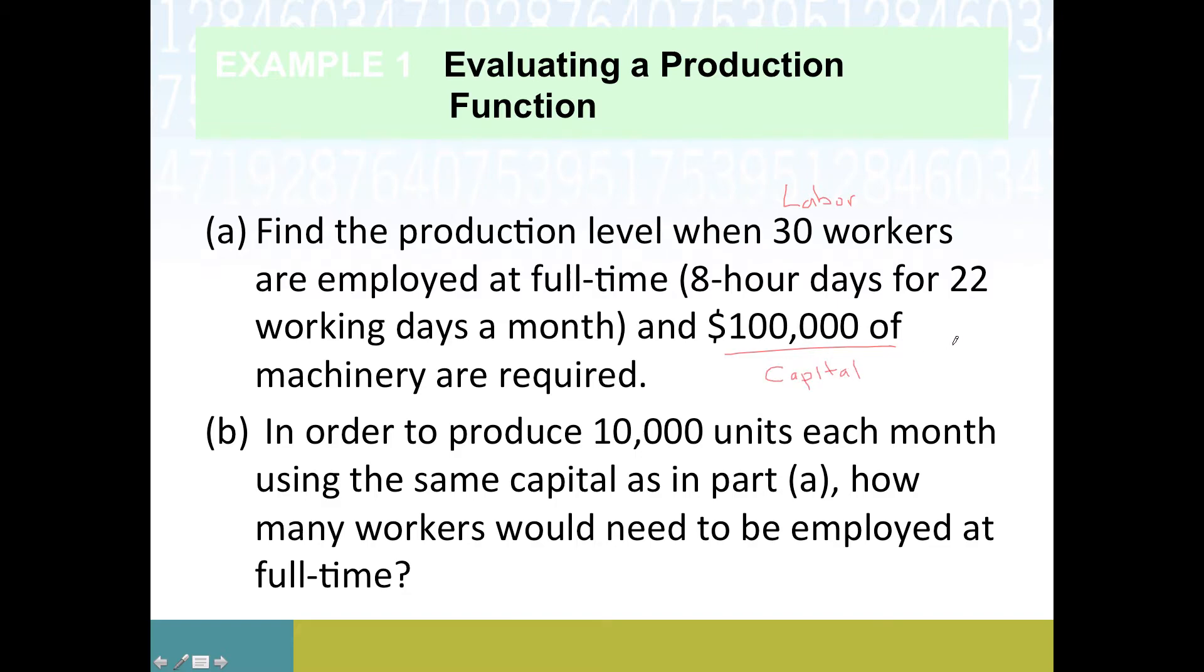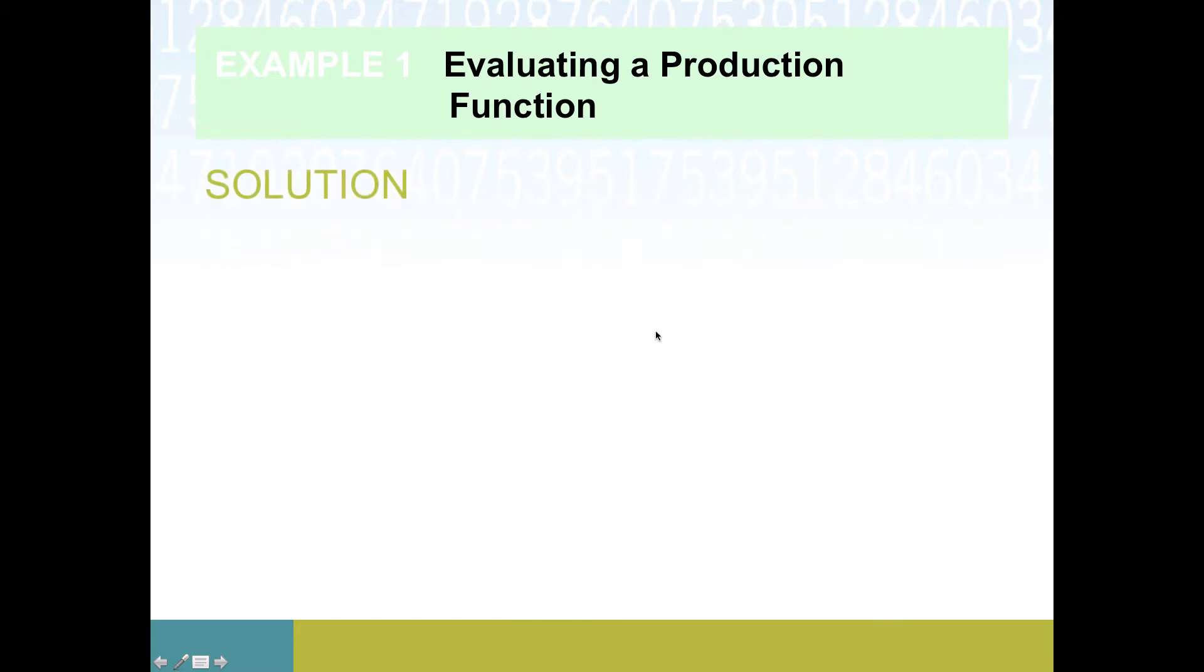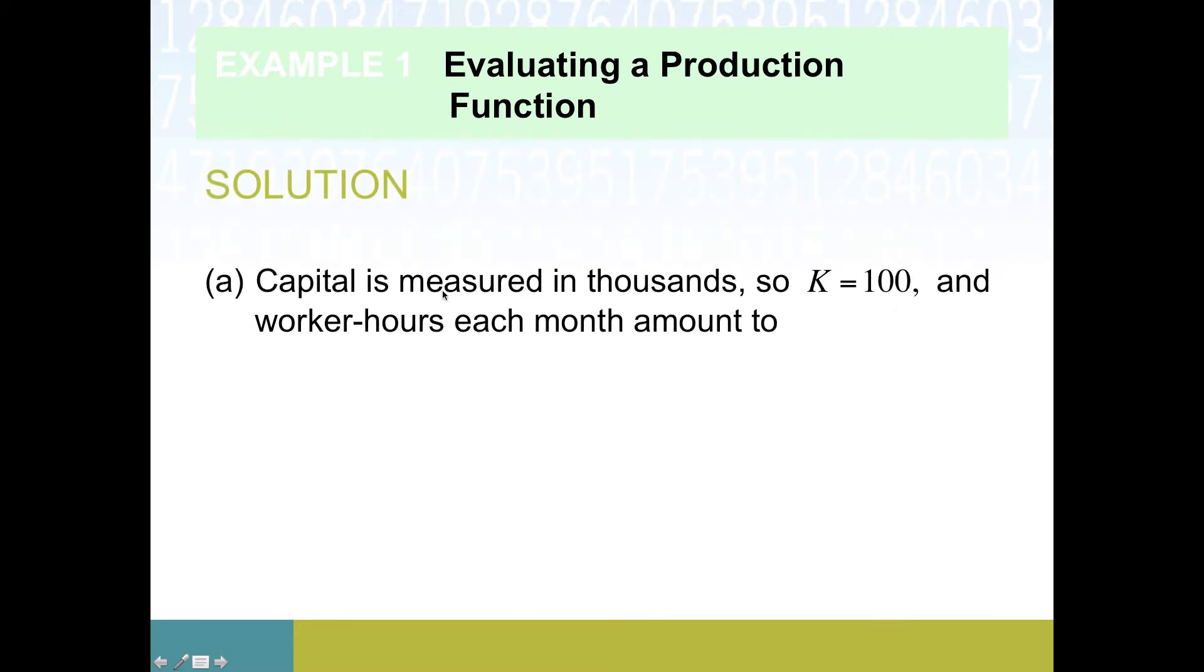Capital is measured in thousands of dollars, so $100,000 means K is 100. Worker hours: we had 30 full-time workers, full-time means 8 hours a day, 22 days a month, so that gives us 5,280 worker hours total every month. That's exactly what we needed in order to get production.